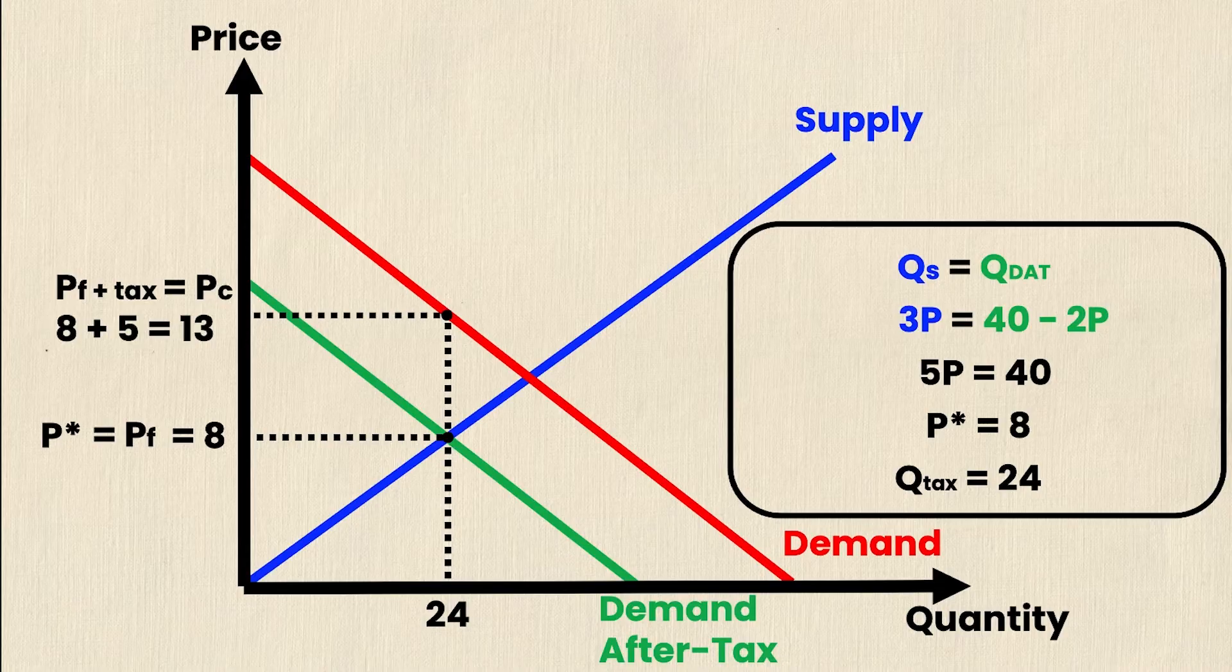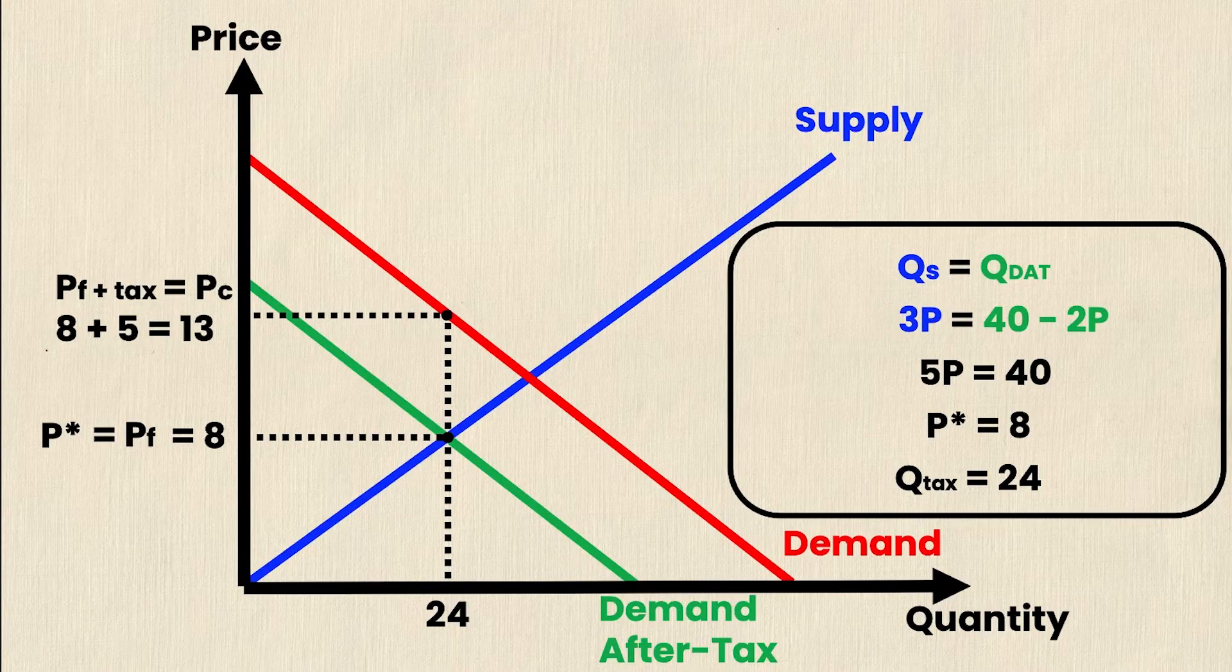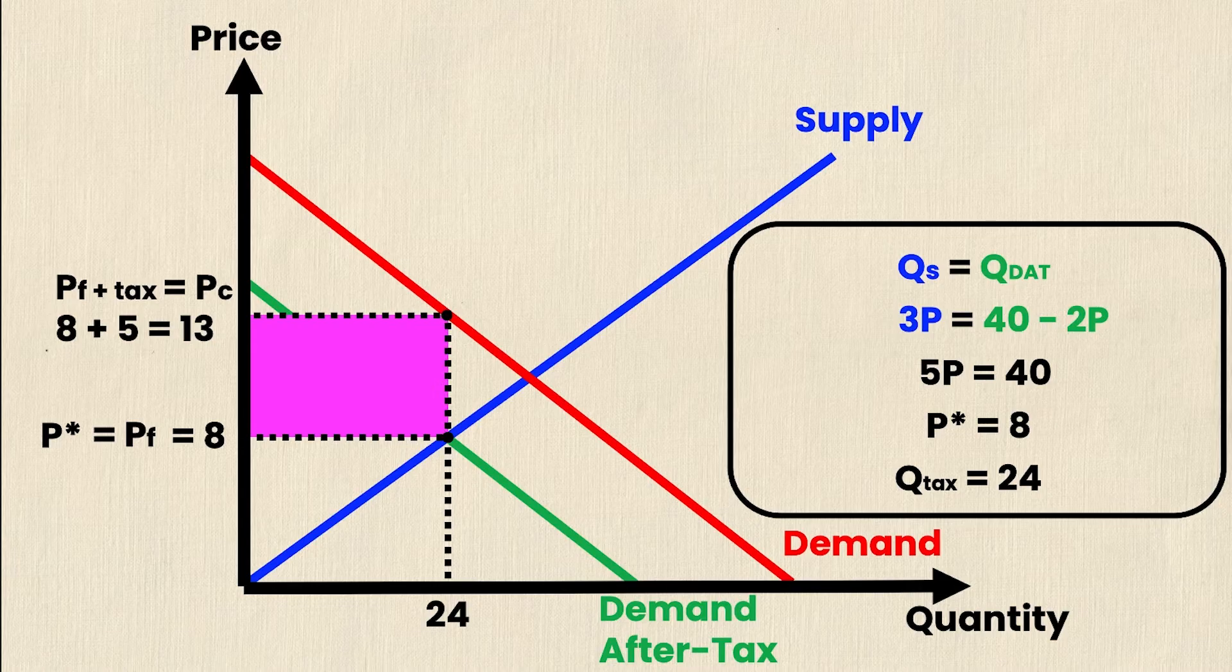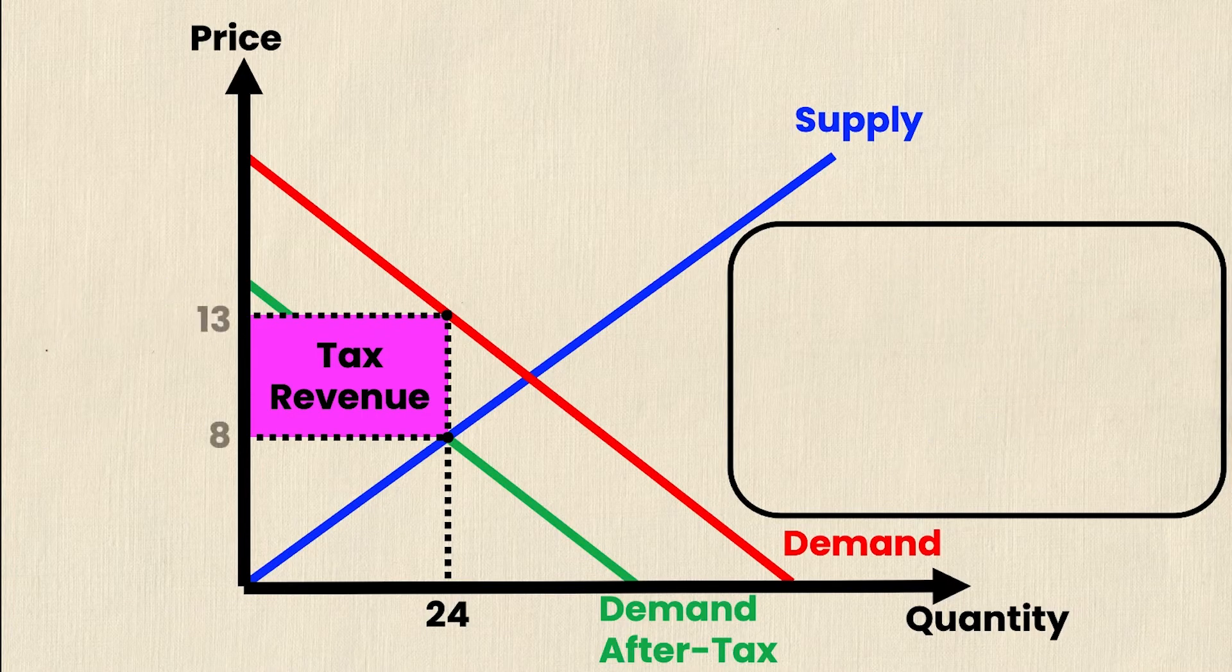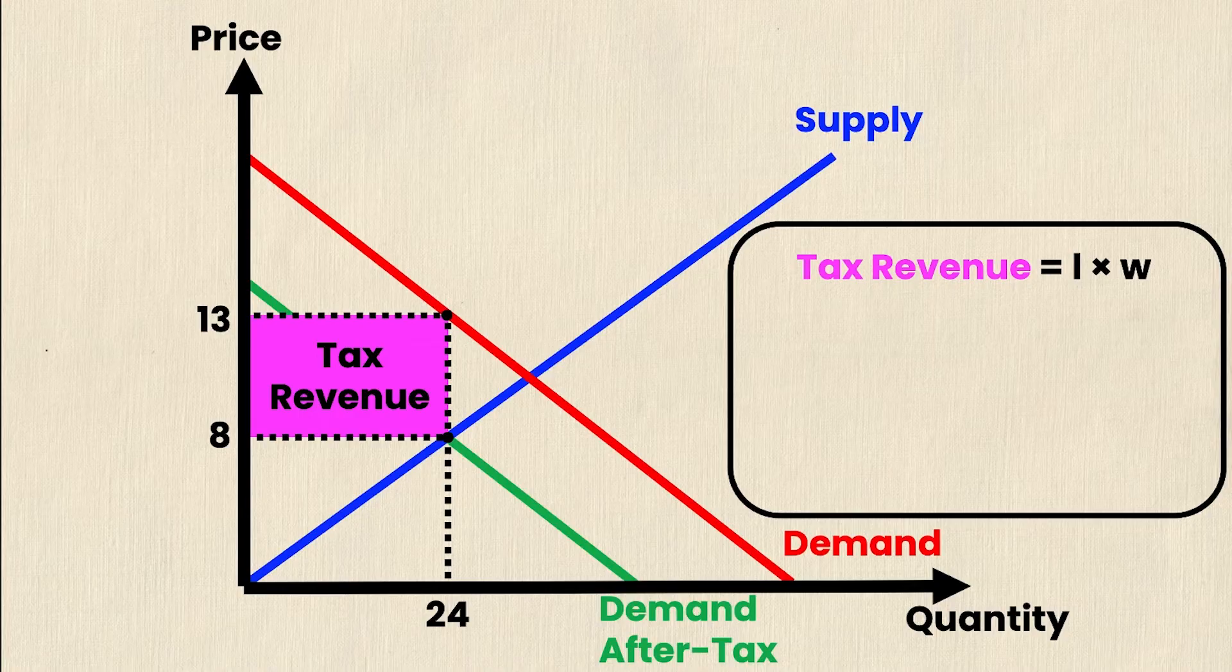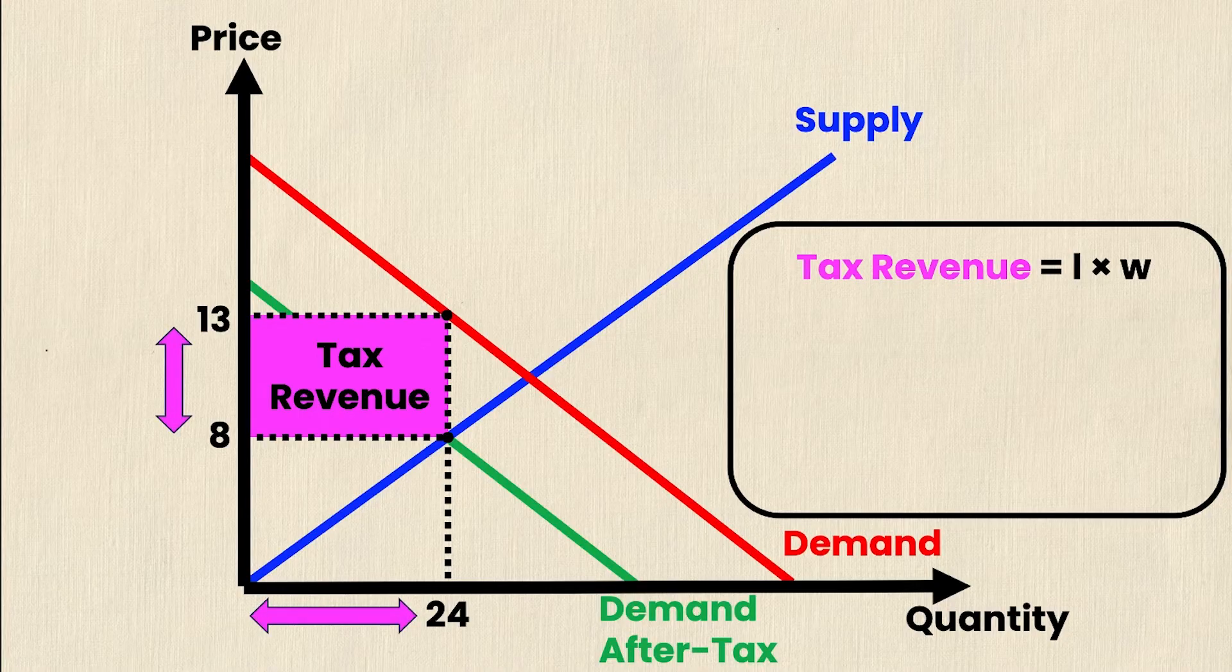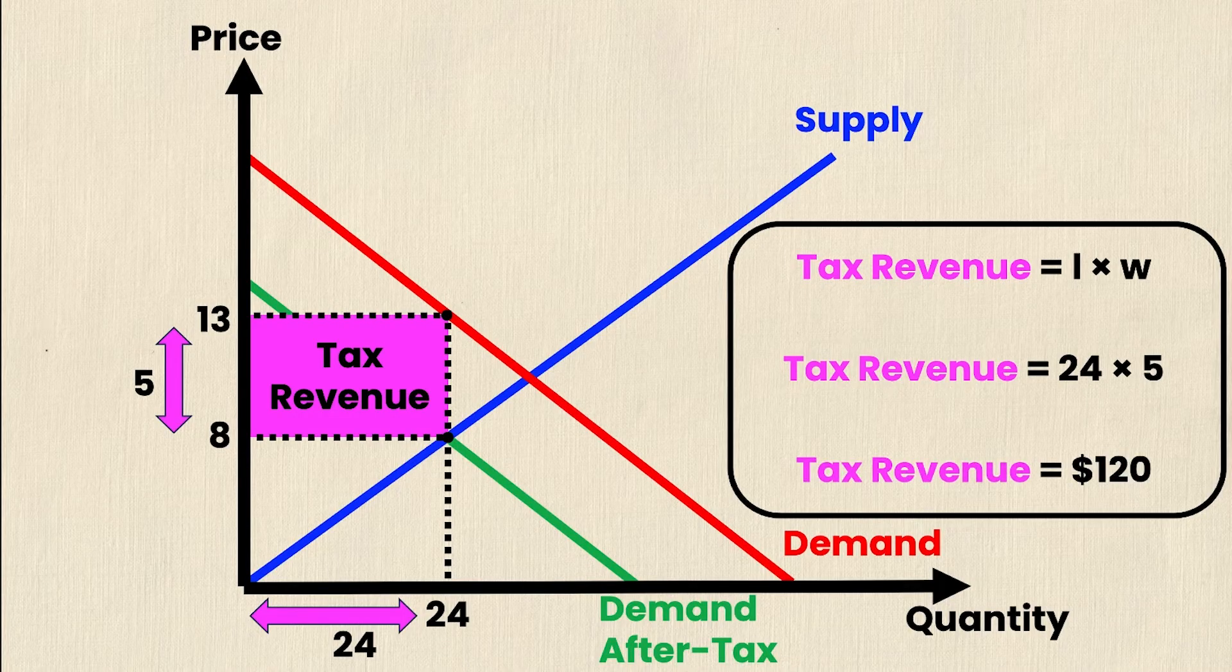Now you could also find this value of 13 by substituting a Q value of 24 into the original demand equation, which was 50 minus 2P. If you do this and solve for P, you will also get 13. So there's two ways to solve that. Now we know from part one that this pink rectangle right here is actually my tax revenue, but now we want to look at how to calculate it. Now, lucky for me, tax revenue is simply a rectangle, and that's easy to solve using the formula for solving for the area of a rectangle. So tax revenue is equal to length times width. And it's nice and simple because my length and width are right here. So tax revenue is equal to 24 times 5. Therefore, my tax revenue is equal to $120.